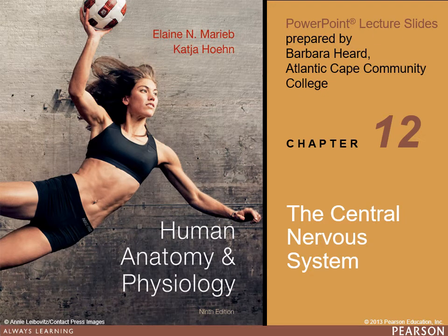This chapter focuses on the central nervous system, which is comprised of the brain and spinal cord. The next chapter will cover the peripheral nervous system.